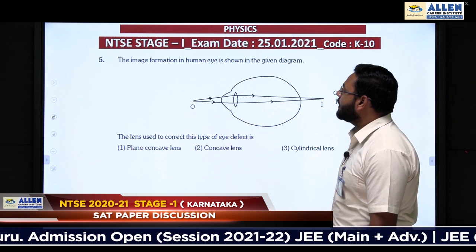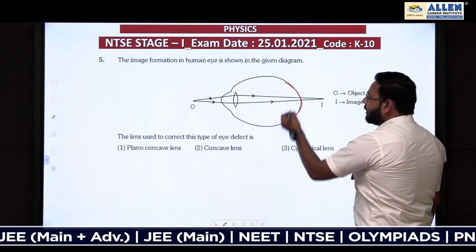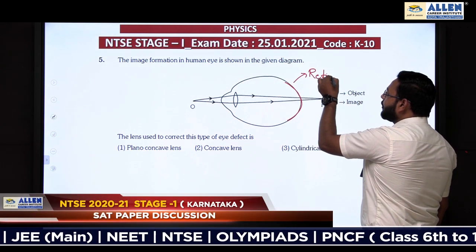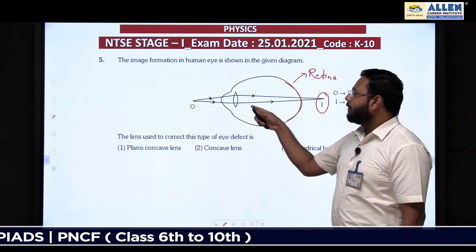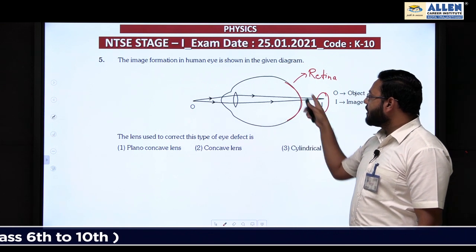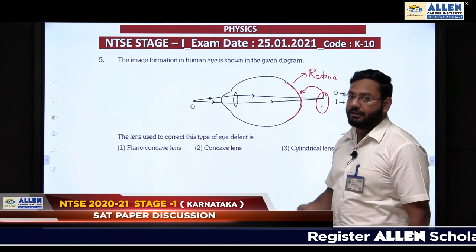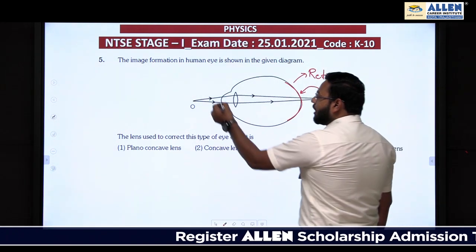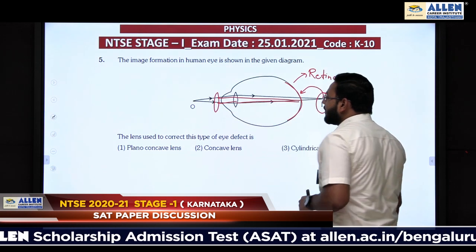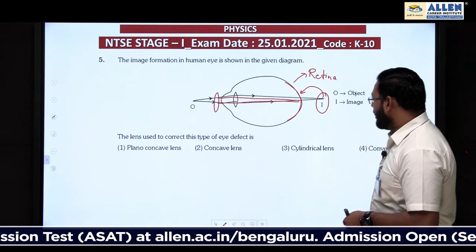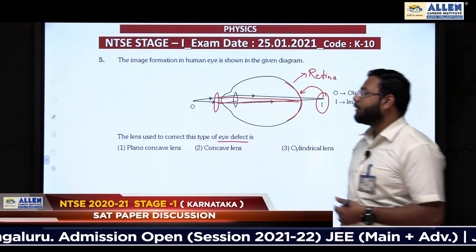Question number 5: The image formation in the human eye shows the image forming behind the retina instead of on the retina. This means the eye lens has lost some power of converging. To bring the image onto the retina, we need to converge rays more, requiring a convex lens. This defect is called hypermetropia, also known as farsightedness — the person can see far things clearly but not nearby things. Convex lens corrects this defect.